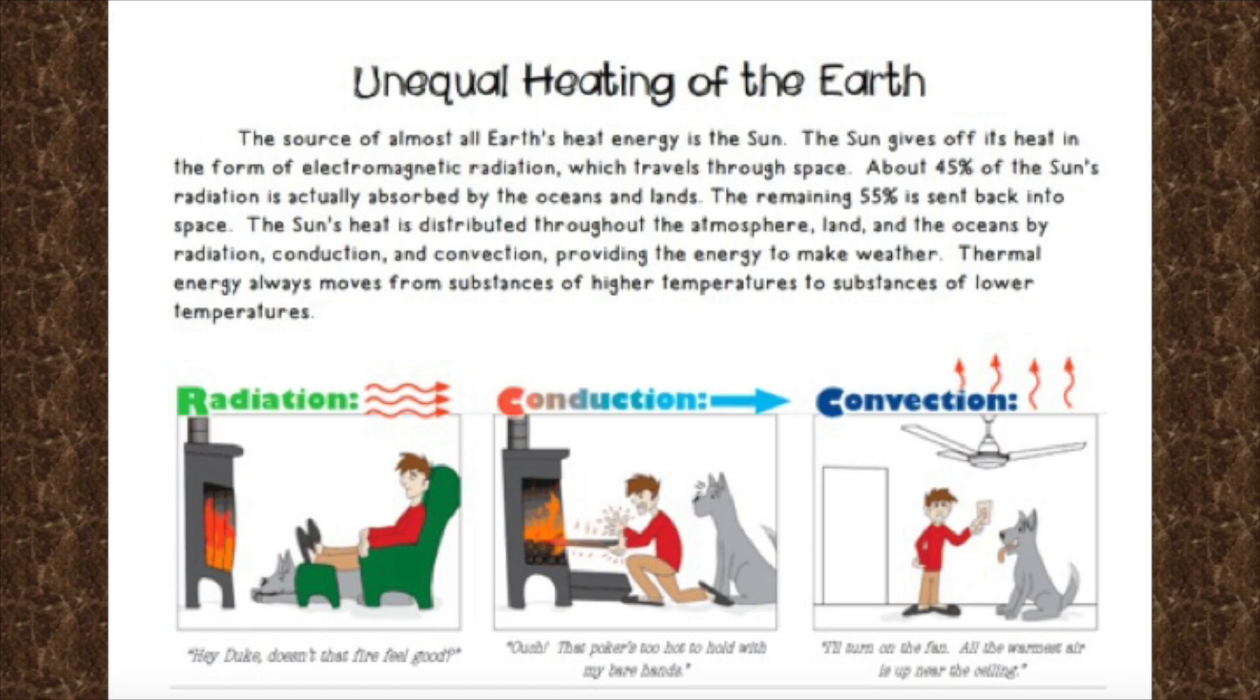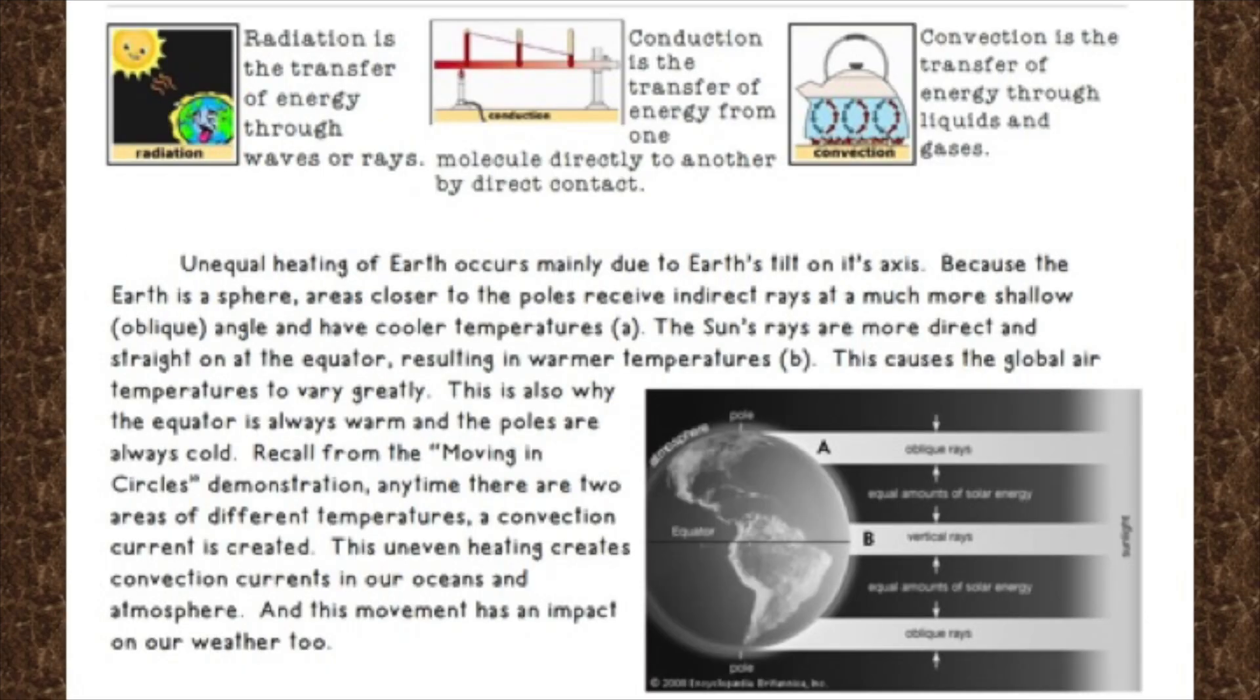Thermal energy always moves from substances of higher temperature to substances of lower temperature. The heat is going to be lost. So, if it's hotter, it's going to lose heat energy to the cooler object or the cooler matter. Unequal heating of Earth occurs mainly due to Earth's tilt on its axis. Because the Earth is a sphere, areas closer to the poles receive indirect rays at a much more shallow or oblique angle and have cooler temperatures. The sun's rays are more direct and straight on at the equator, resulting in warmer temperatures. This causes the global air temperatures to vary greatly. This is also why the equator is always warm and the poles are always cold. This uneven heating creates convection currents in our ocean and atmospheres. And this movement has an impact on our weather, too.